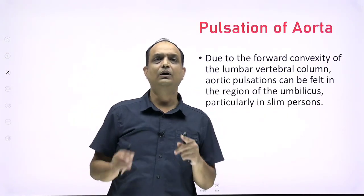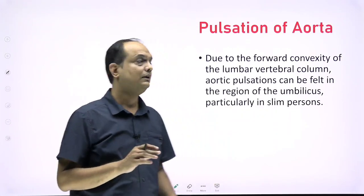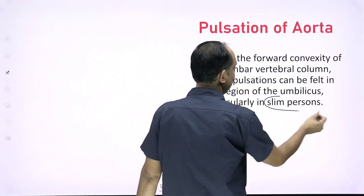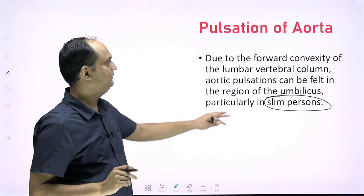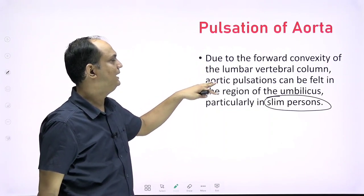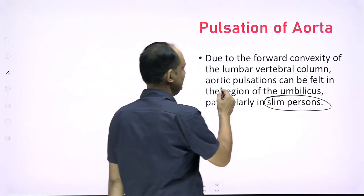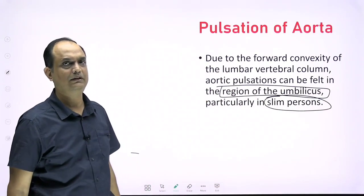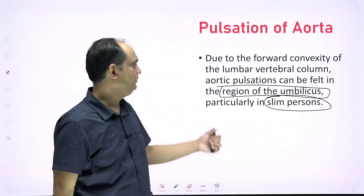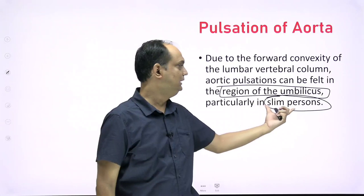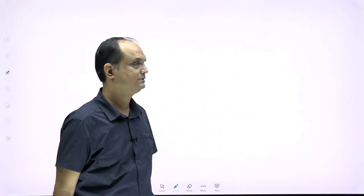Aortic pulsation is generally not visible, but in very thin, slim persons, due to the forward convexity of the lumbar vertebral column, aortic pulsation may be felt in the region below the umbilicus. At the end of this class on the abdominal aorta, you now have an idea of where it starts, where it ends, its relations, and its different branches. Thank you.